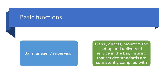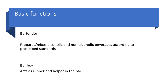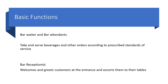The bar manager or supervisor plans, directs, and monitors the setup and delivery of service in the bar, ensuring that service standards are consistently complied with. A bartender prepares or mixes alcoholic and non-alcoholic beverages according to prescribed standards, while a bar boy acts as a runner and helper in the bar. Bar waiters and bar attendants take and serve beverages and other orders according to prescribed standards of service. A bar receptionist welcomes and greets customers at the entrance and escorts them to their tables.